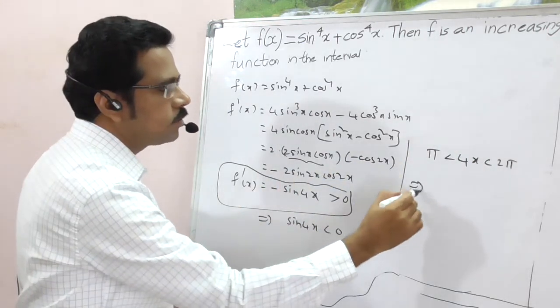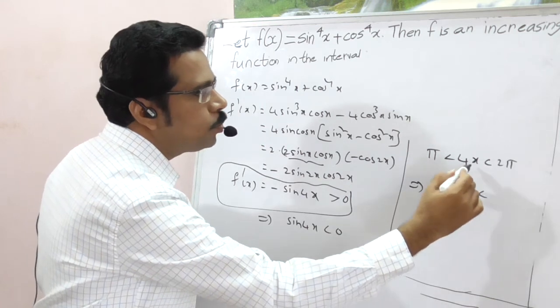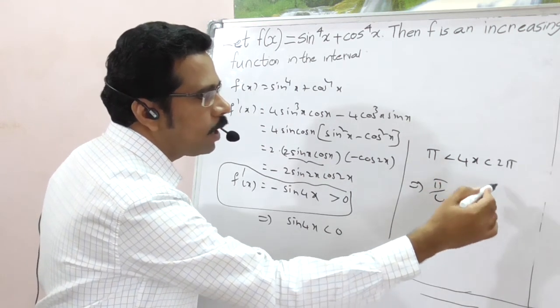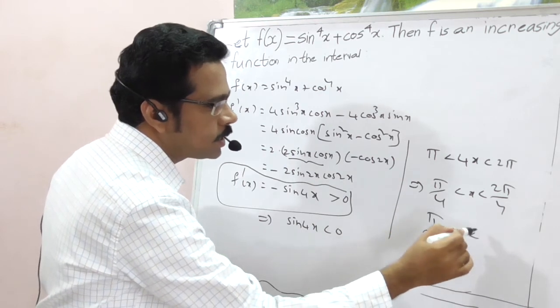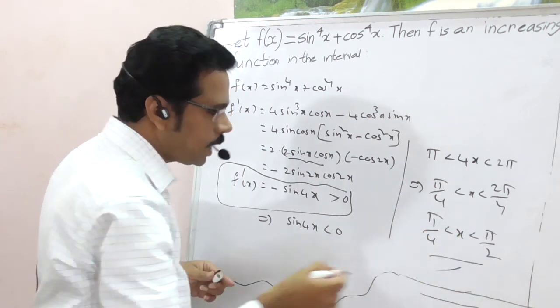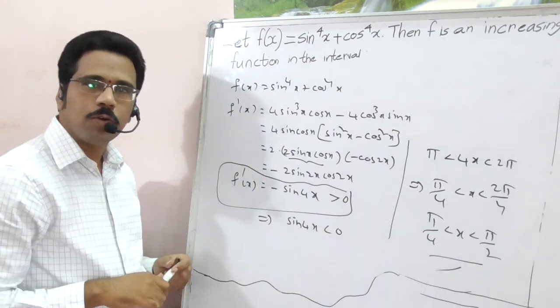So that implies, what is x here? The final step, π/4 less than x less than 2π/4. What is 2π/4? Final answer, π/4 less than x less than π/2. So in this interval, f(x) is an increasing function.